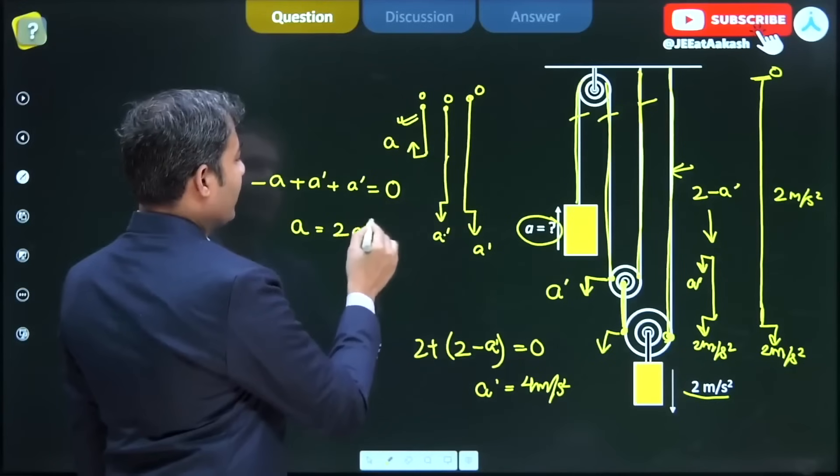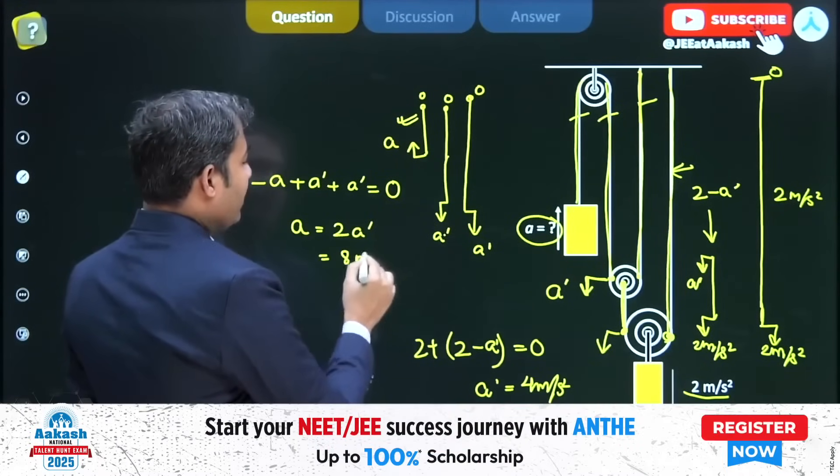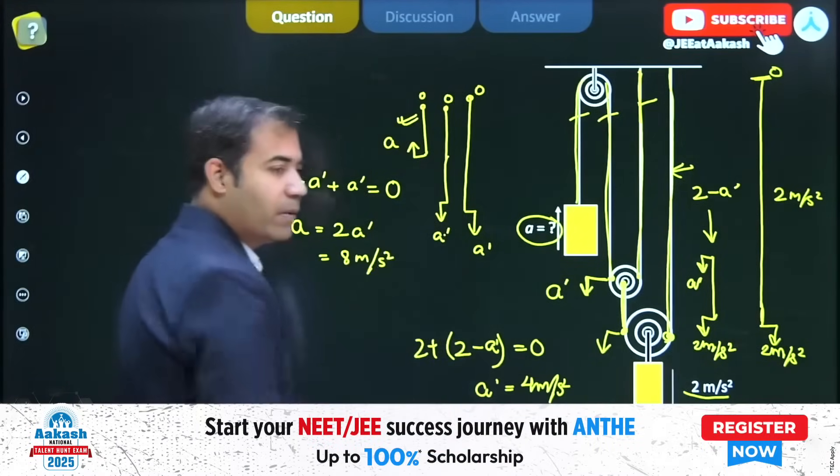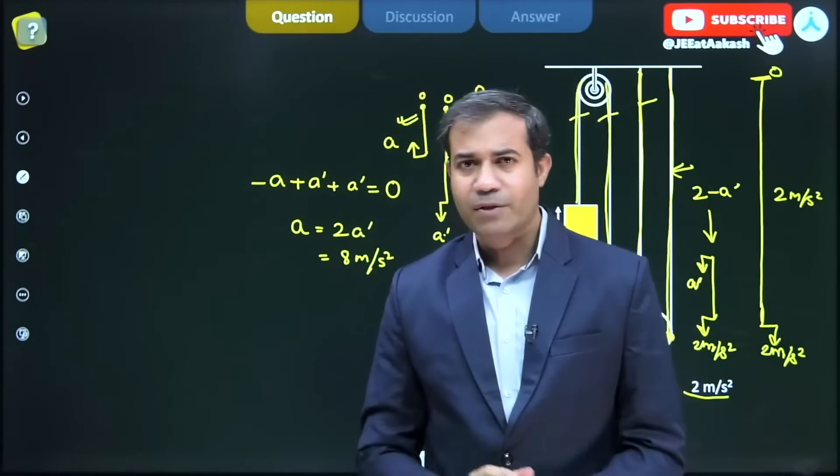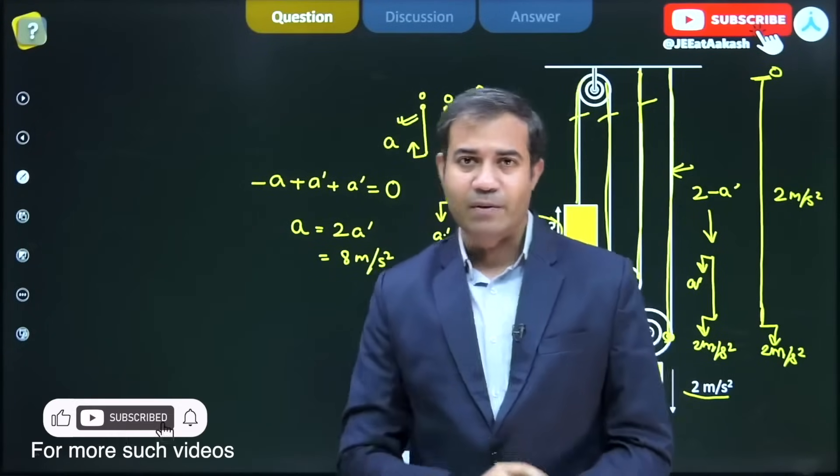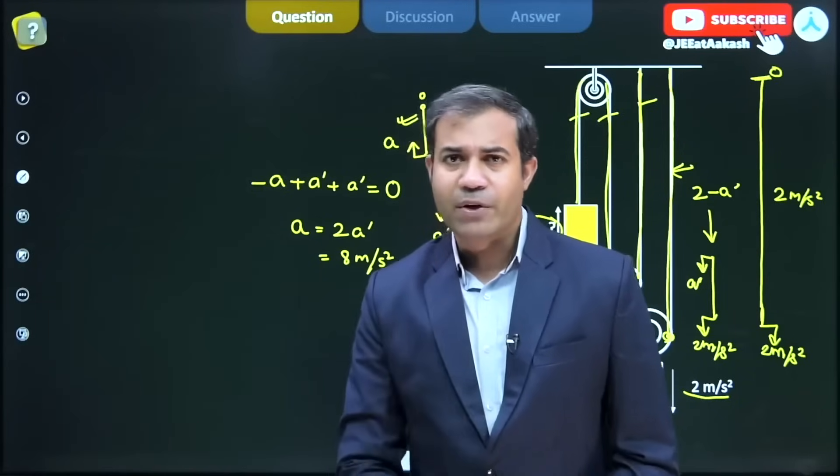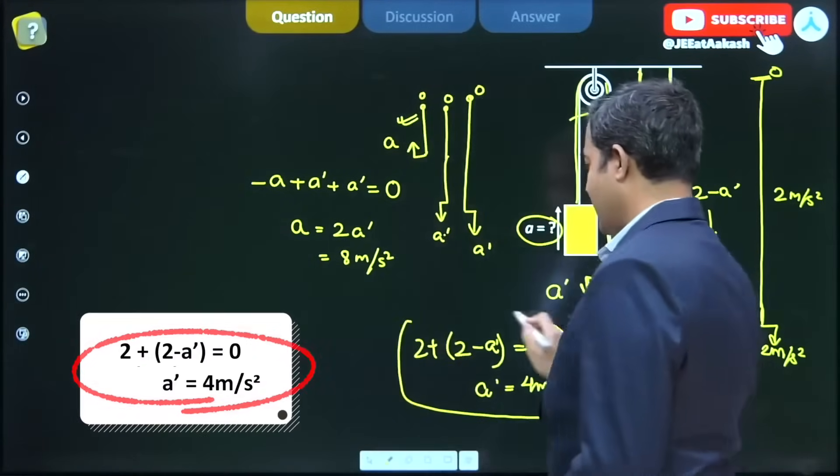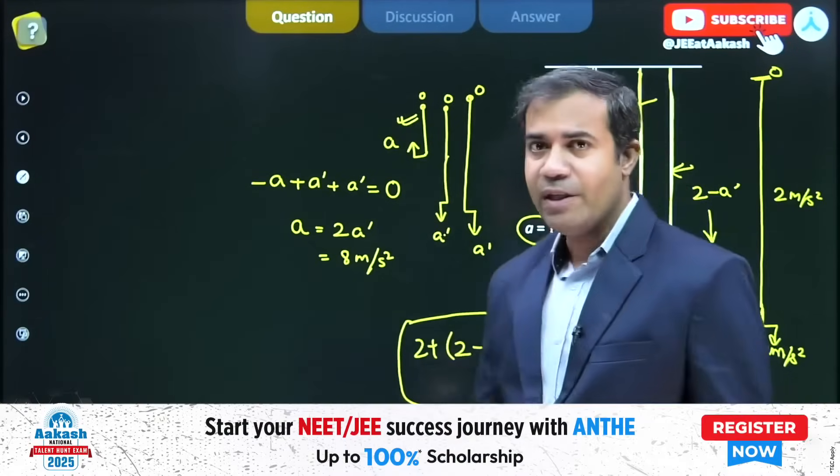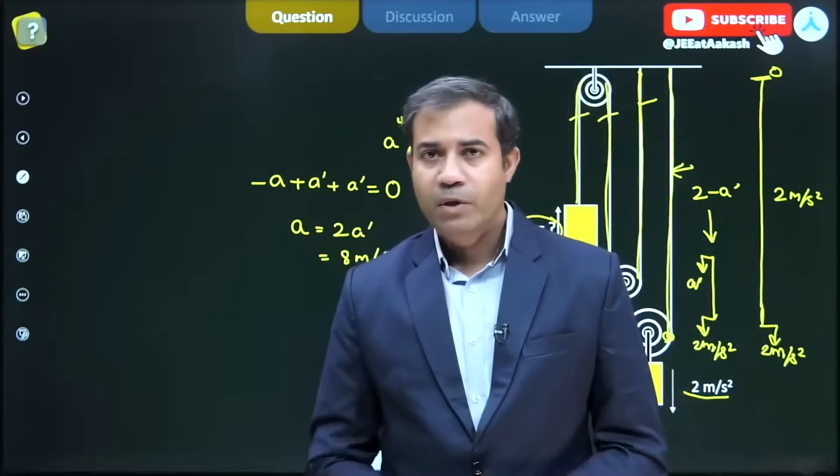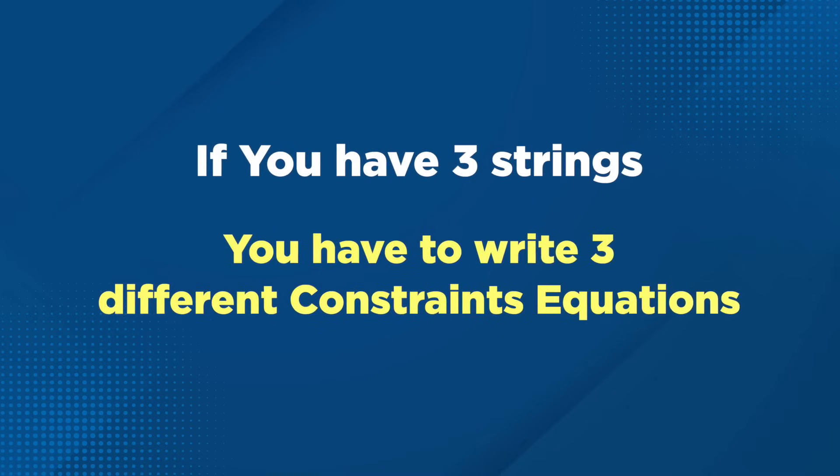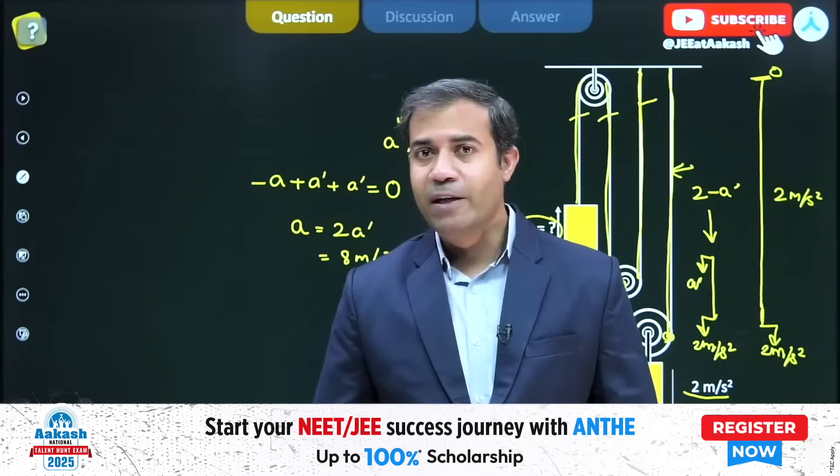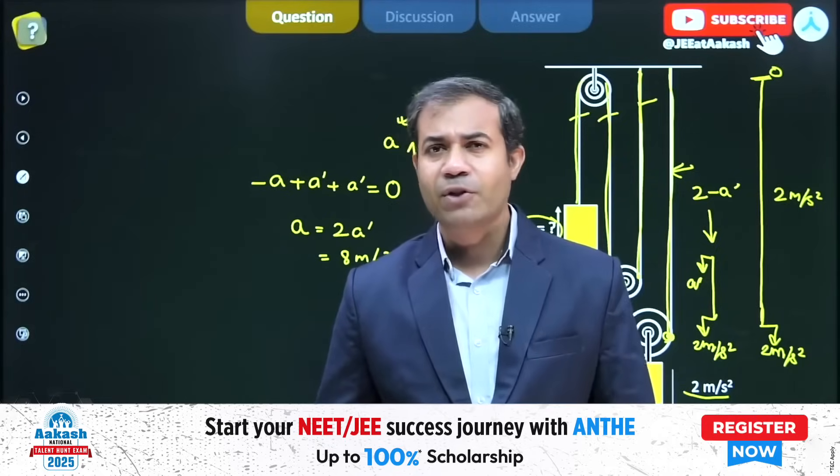We now have a slightly more complicated version of string constraints. We are writing two equations for two different strings. Since each string is inextensible on its own, constraint equations have to be written independently for each. If you have three strings, you have to write three different constraint equations, and finally eliminate values which you don't require.